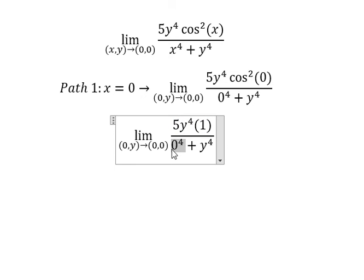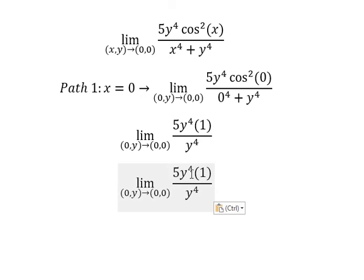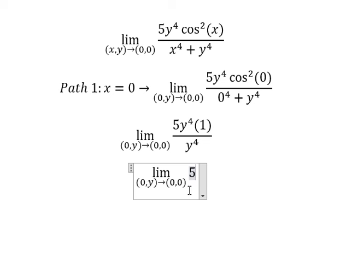This one we have number zero. y to the power of four divided by this one, we have number one. And now we just have only number five. Now we consider part number two.